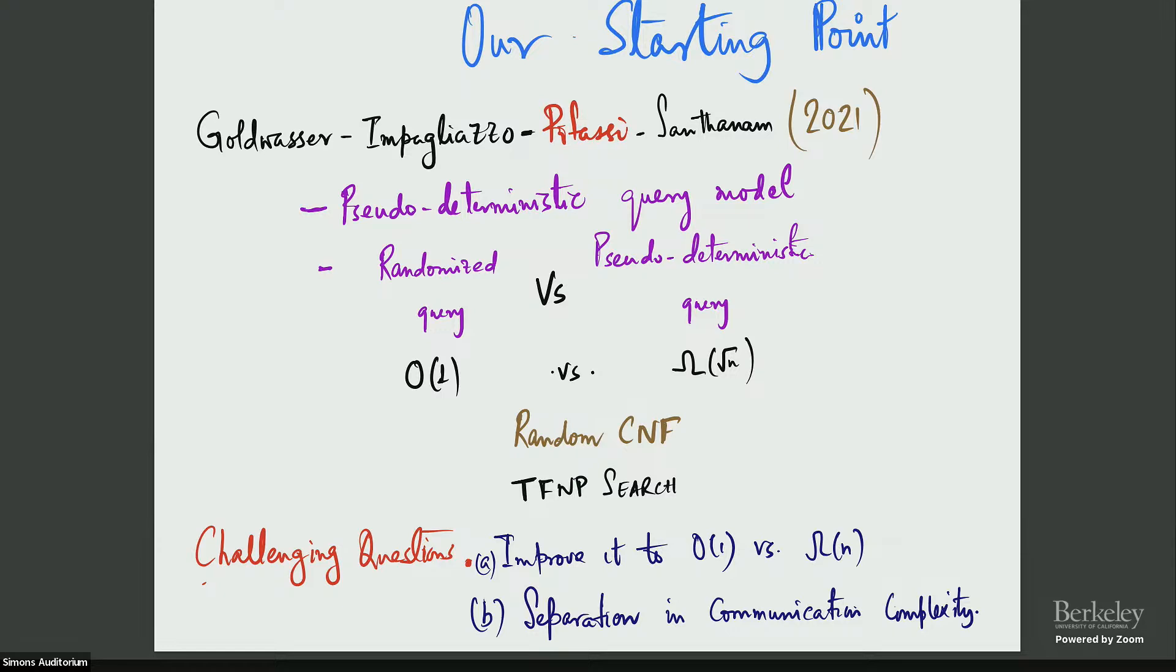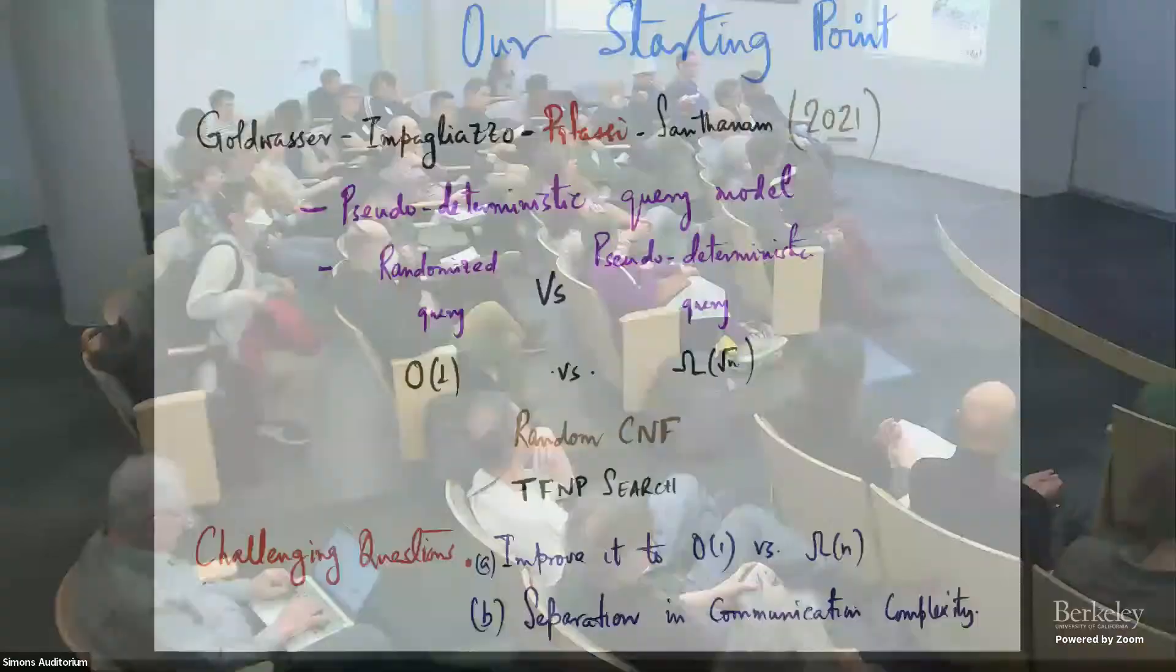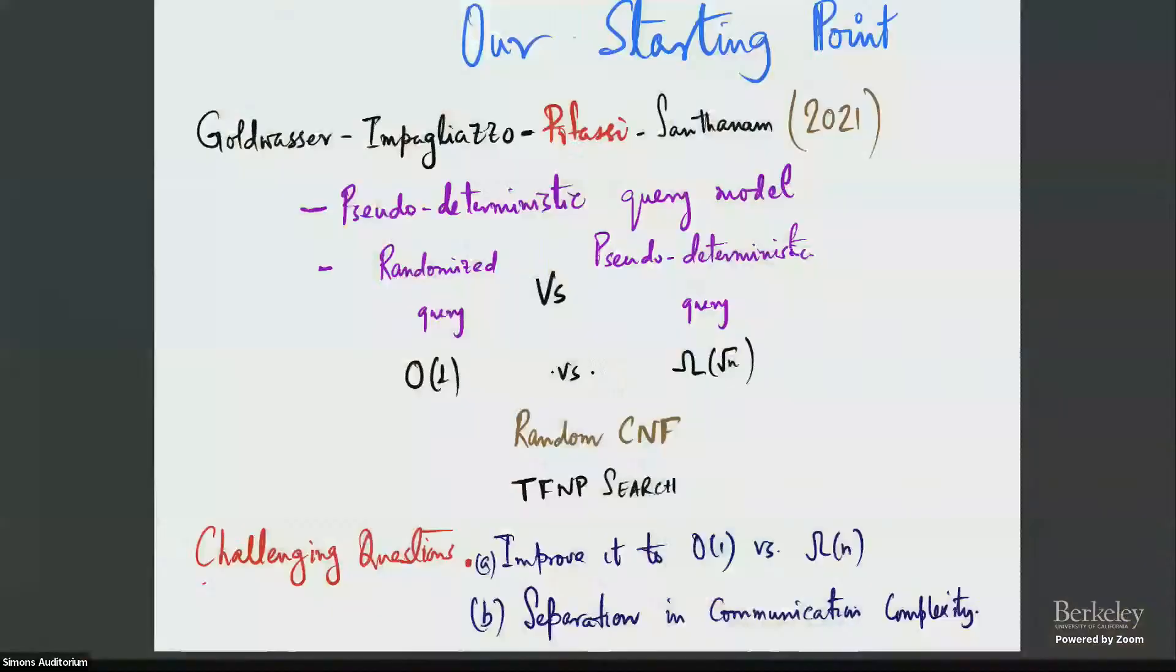So what is the random CNF total function and search problem? So for every CNF, if you take a random CNF, it's with high probability unsatisfiable. And so we look at the search problem corresponding to given an assignment, find a falsified clause. That's what I do.